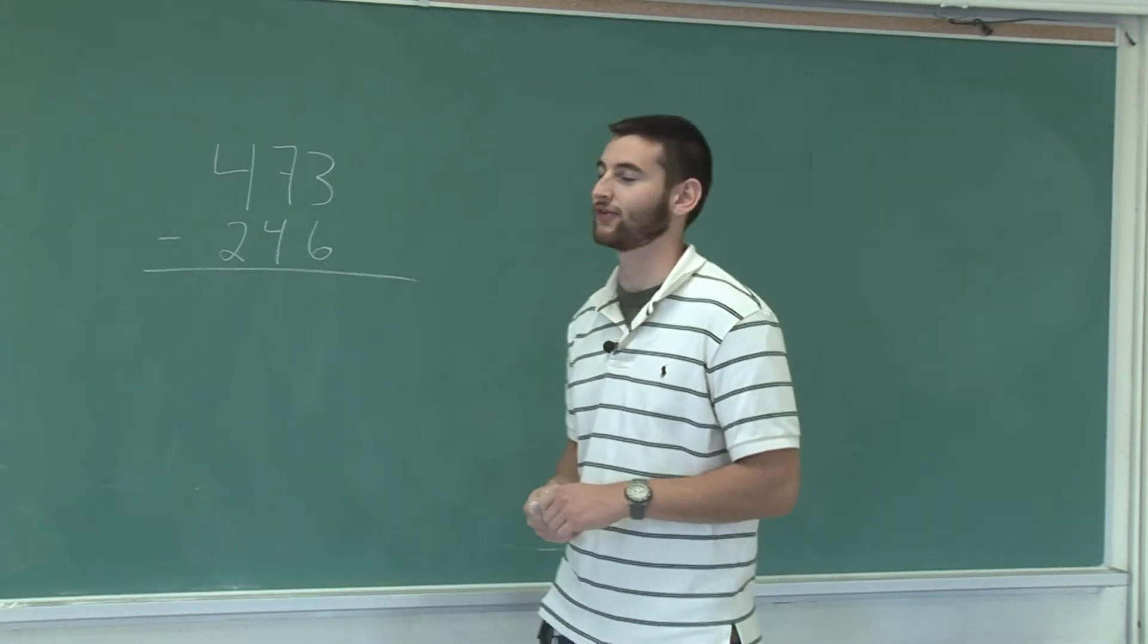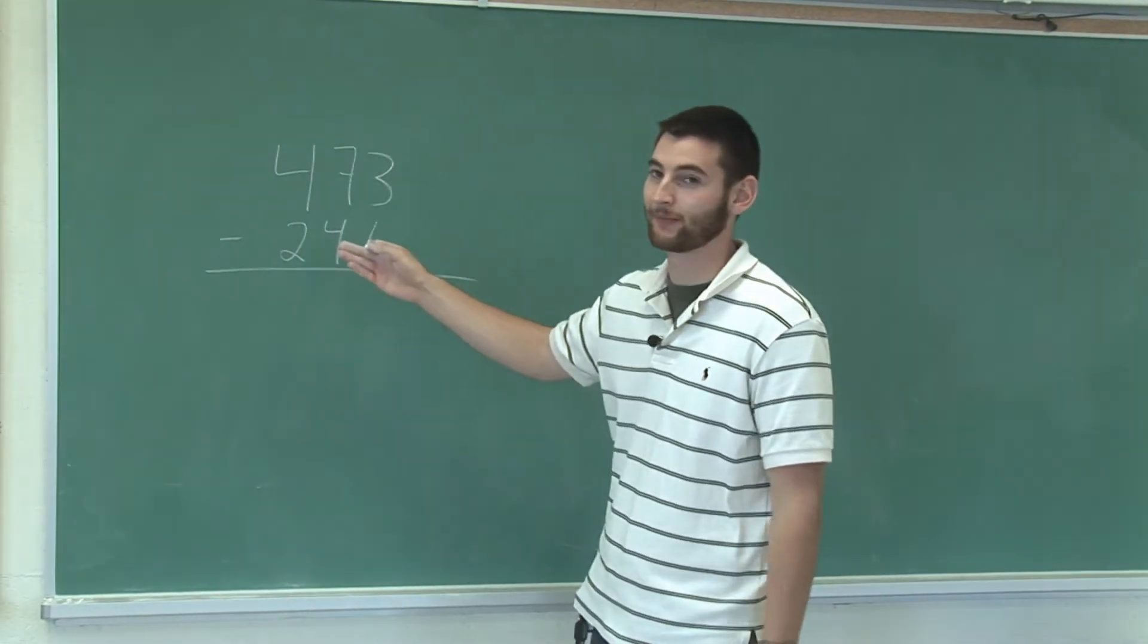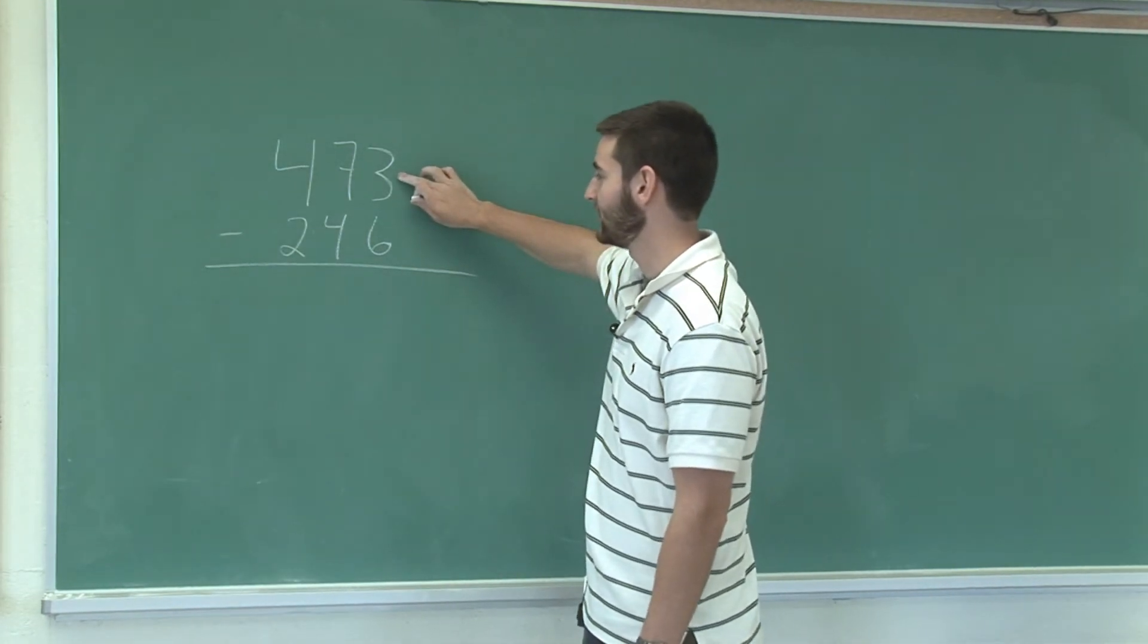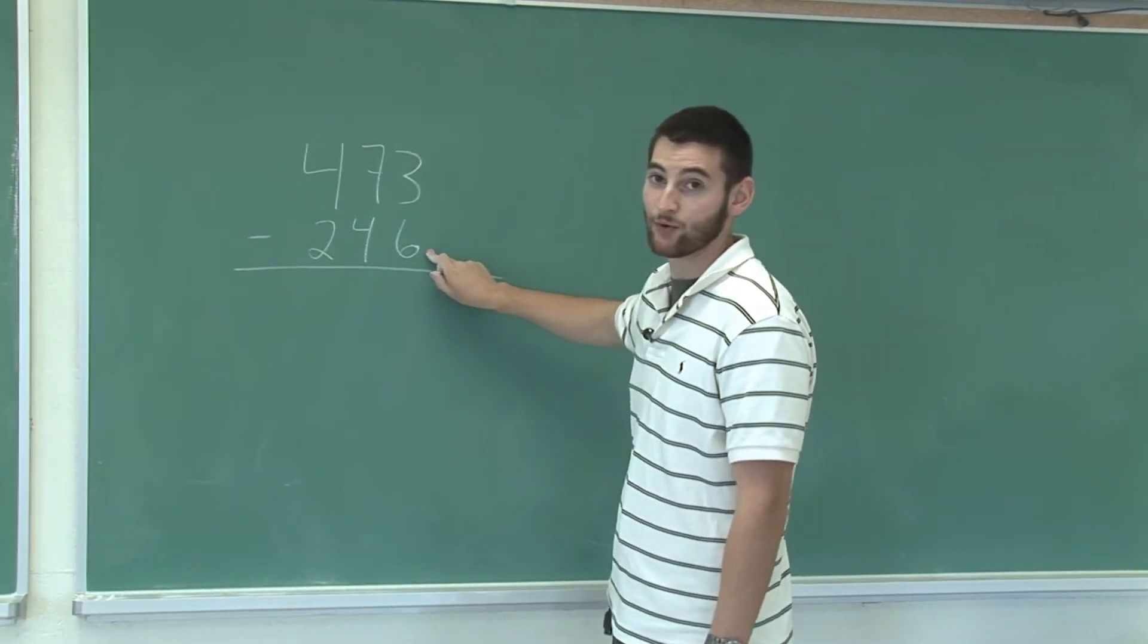Okay, now I'm going to show you how to subtract three-digit numbers. In this case, I've chosen a number where the unity place is smaller than the number I'm subtracting, which will require me to borrow.